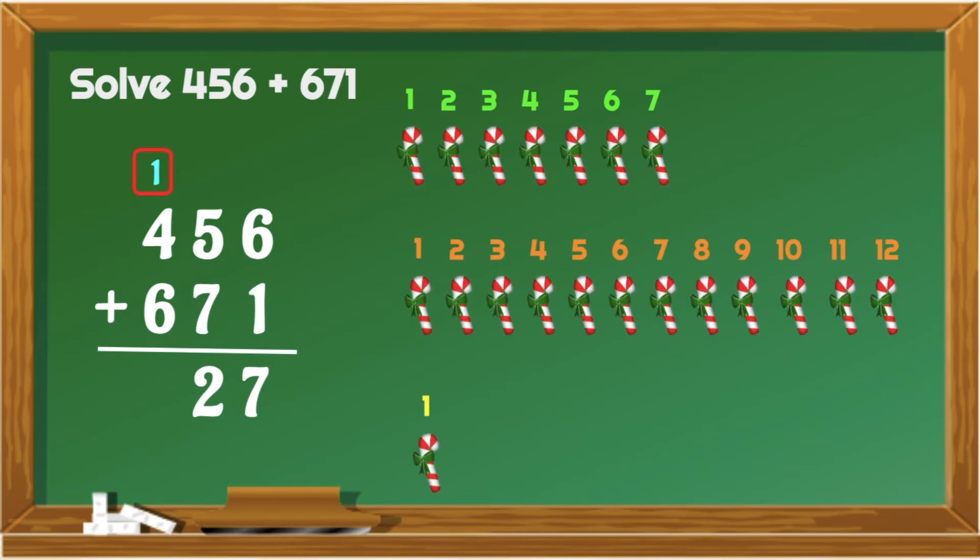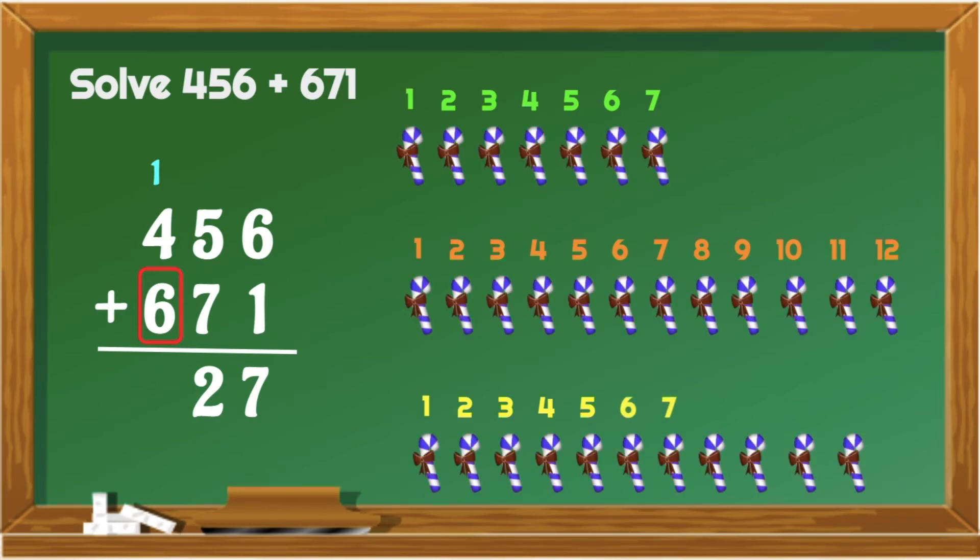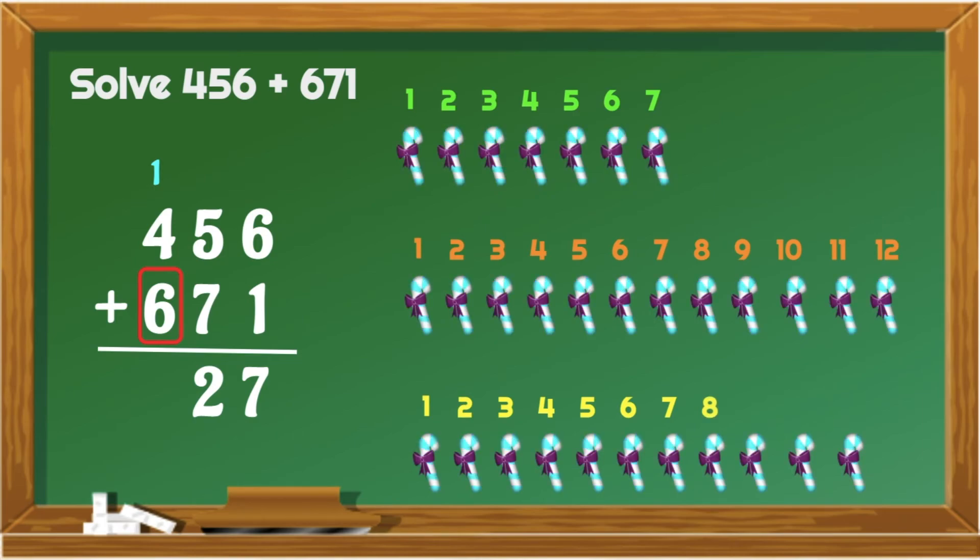Now, let's add 4 to 1. From 1, let's count on. 2, 3, 4, 5. And then lastly, add 6 more. 6, 7, 8, 9, 10, 11. 456 plus 671 is equal to 1,127. Great!